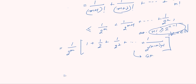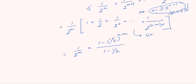The sum of the GP is 1 by 2^m into (1 minus (1/2)^(n minus m)) divided by (1 minus 1/2), which gives us 1 by 2^(m-1) minus 1 by 2^(n-1). This is less than or equal to 1 by 2^(m-1).